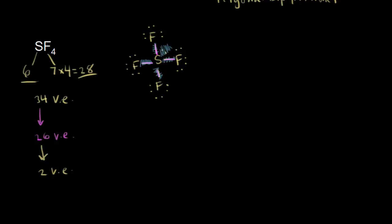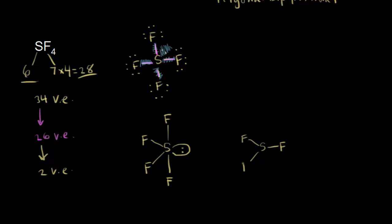Let's draw two possible versions of the structure. In the first version, the lone pair of electrons on sulfur is in the equatorial position, with two fluorines also equatorial and one fluorine axial above and one axial below. The other possibility is to put the lone pair in the axial position, giving three fluorines in equatorial positions, a lone pair axially, and a fourth fluorine on the other axial position.